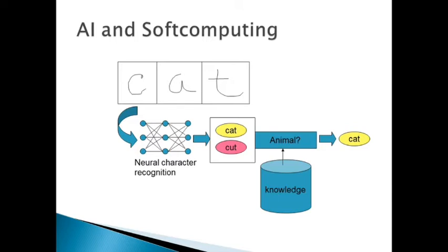Now we are going to see how the word 'cat' is recognized by a machine through soft computing and artificial intelligence. When we denote the word 'cat', the neural network functions to recognize the word. The neural characters are recognized and formed as an artificial neural network structure, and it is characterized to identify this as a cat - an animal.